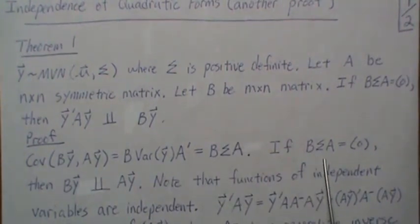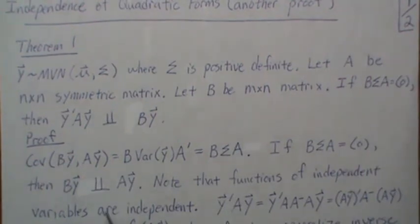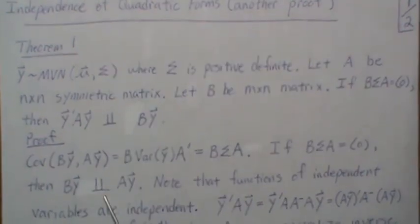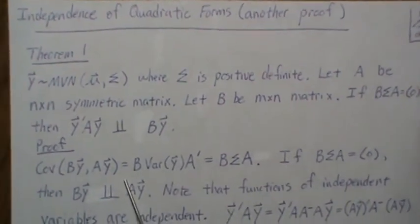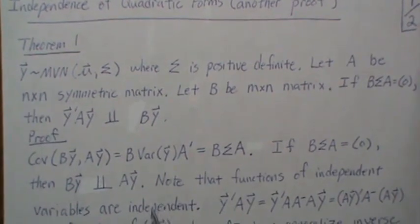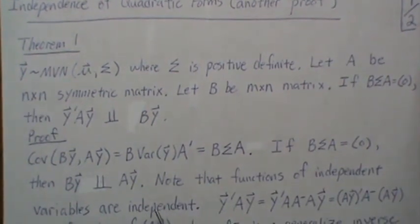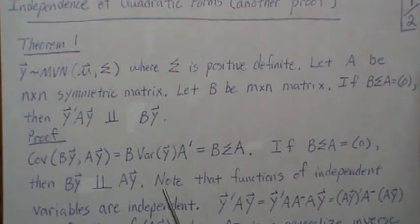Now if BΣA is zero, then we know BY is independent of AY, and I just put out a video on that called normal random variables covariance zero and independent. I actually haven't titled it yet, I just created it and need to upload it to YouTube.